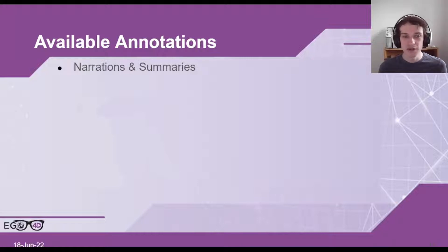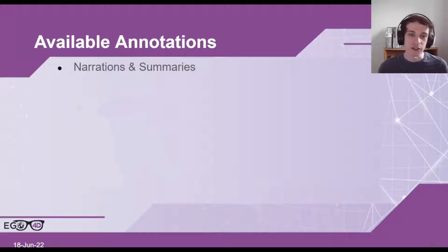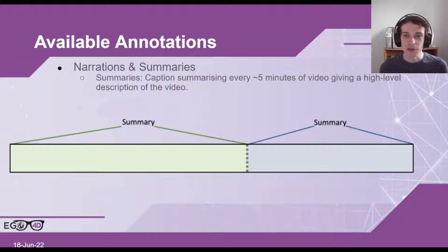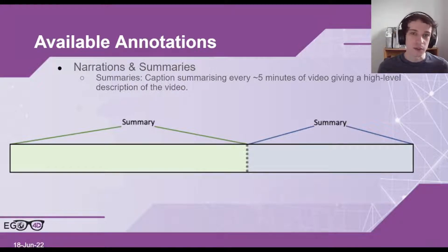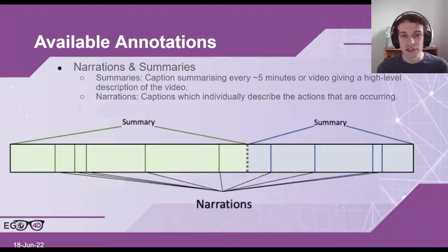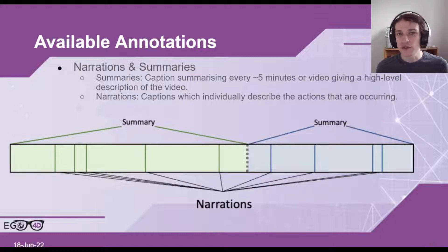In terms of annotations, we have two types of annotations which were collected for the whole set of the videos, and these include narrations and summaries. The summaries are a caption that summarises every five minutes of video, giving a high-level description of the video. In this example, you can see maybe a nine-minute video which is split into two different chunks, and each chunk will have a separate summary. We also have narrations, and these captions individually describe the actions that are occurring, so they are much more fine-grained than the summaries.